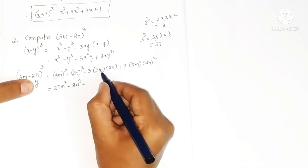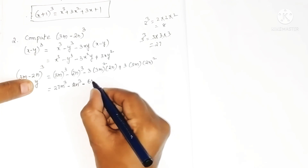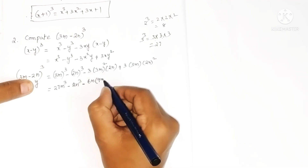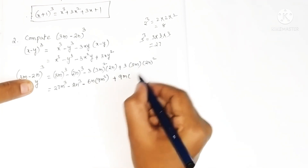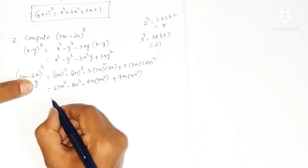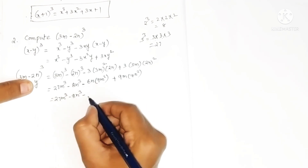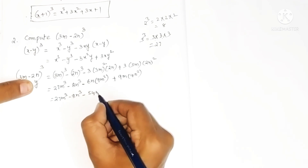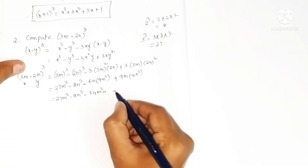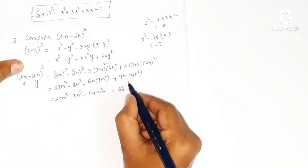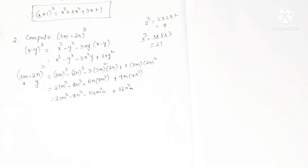Continuing the calculation: 3 times 9 is 27, and 27 times 2 is 54, giving us minus 54 m squared n. Then 3 times 9 is 27, and for the last term we get plus 36 m n squared. Written in order of degree, this is the solution for 3m minus 2n whole cube.